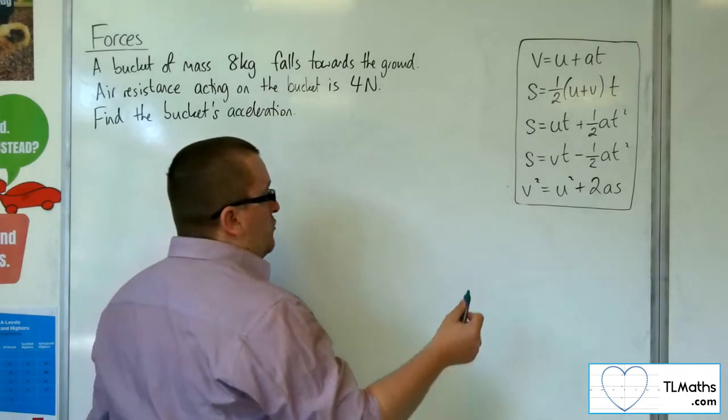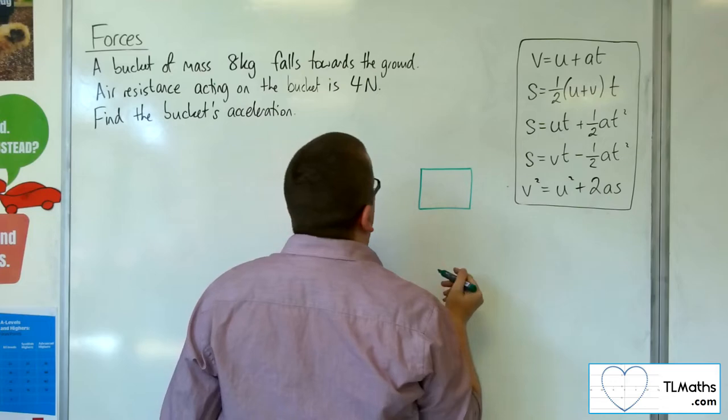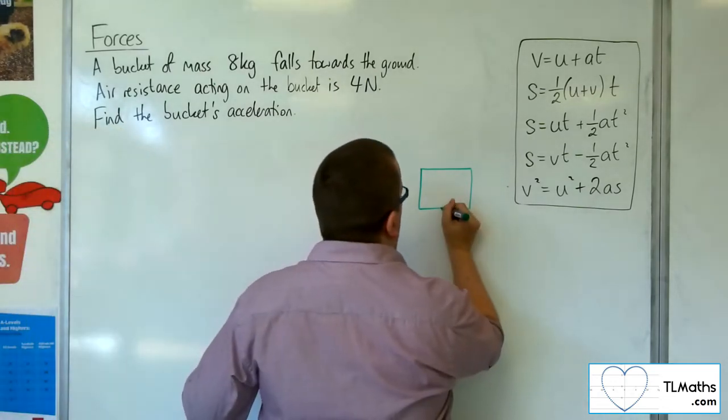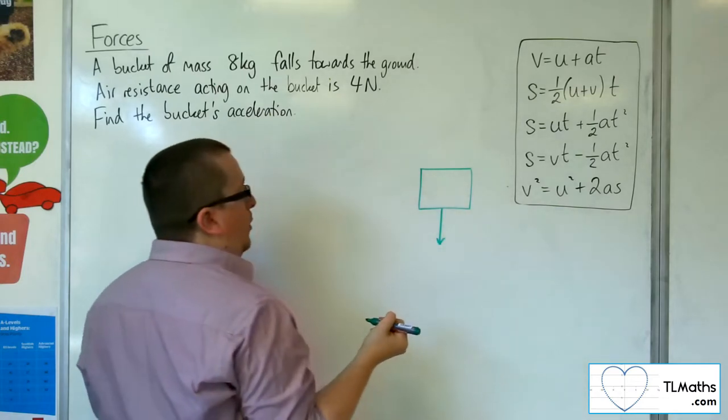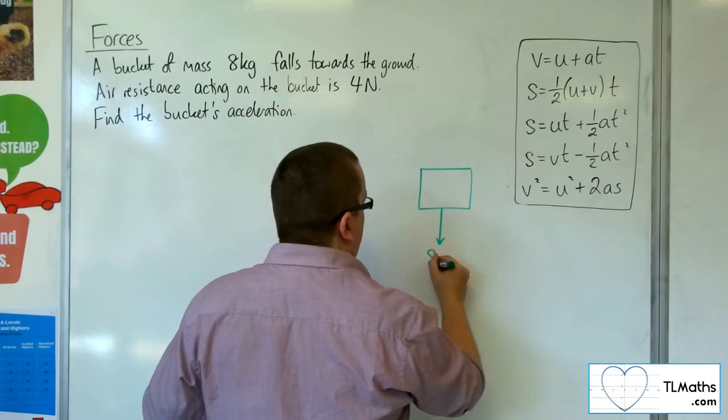Let's draw a little diagram of what's going on. Here is the bucket, and it's falling towards the ground. It will have its weight pulling it downwards, which is mass times gravity, so 8g.